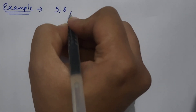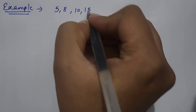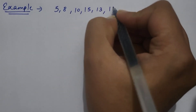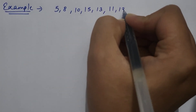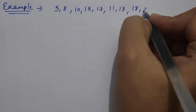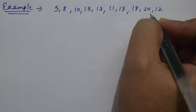Next example: here observations are 5, 8, 10, 15, 13, 11, 13, 18, 20, and 12.